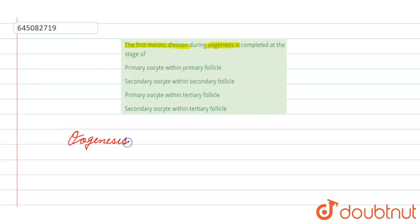So oogenesis is the process of formation of the egg in the female, the process of formation of the female gamete.